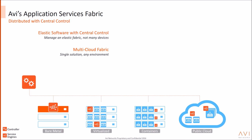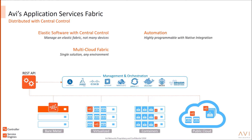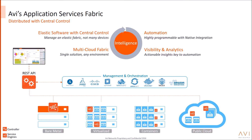The controller is integrated with some of the most commonly used management and orchestration solutions today, such as vCenter, OpenStack, Docker, AWS, Ansible, et cetera. This allows the controller to automate the provisioning of service engines as well as back-end applications if needed. Finally, the service engines collect real-time telemetry on application performance. These insights are available centrally on the controller, and are also used by the fabric to scale itself out or scale applications as needed.